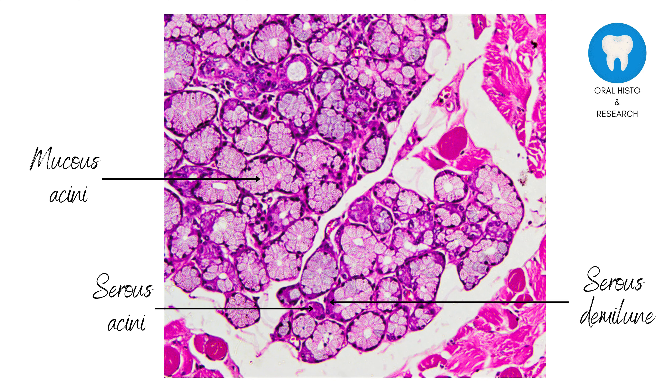The mucous acini of the submandibular salivary gland consist of mucous cells that produce a thick, viscous secretion primarily composed of mucin, which helps lubricate food particles and protect the oral mucosa.